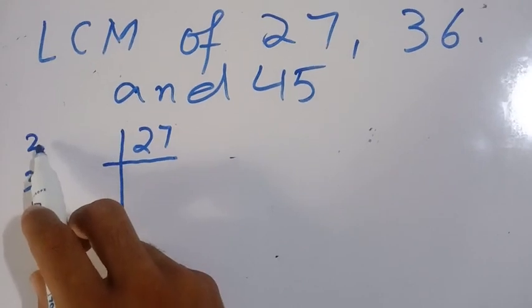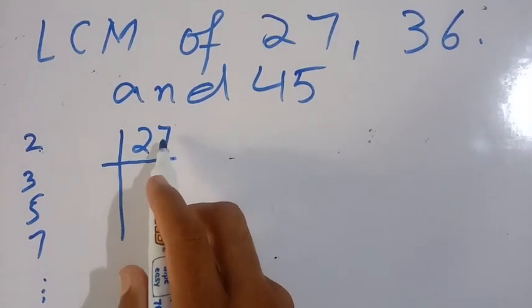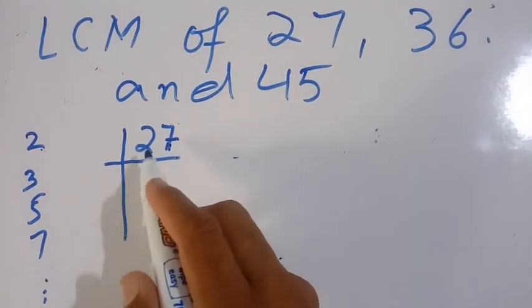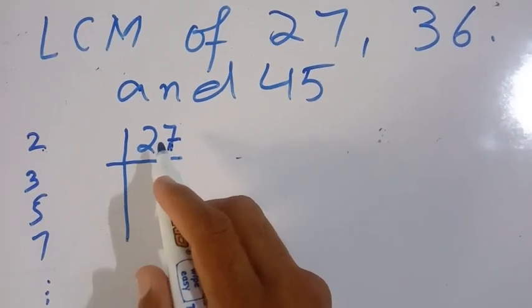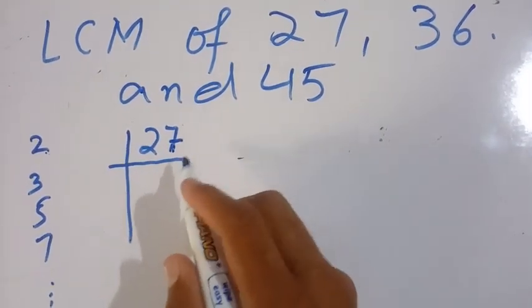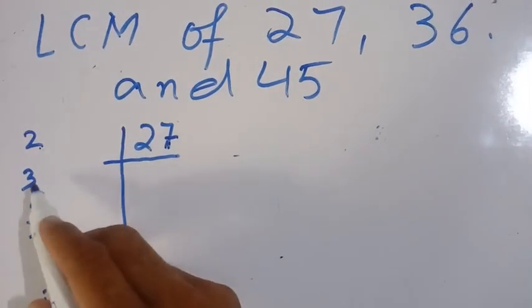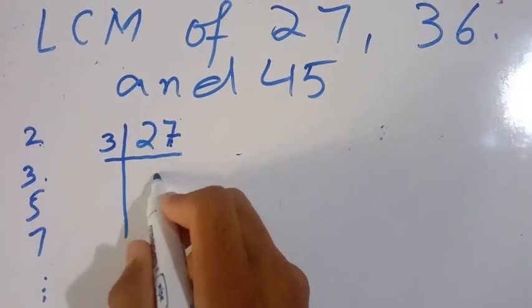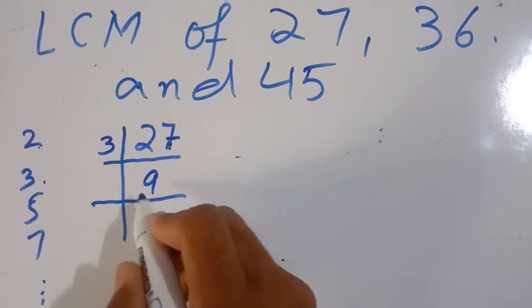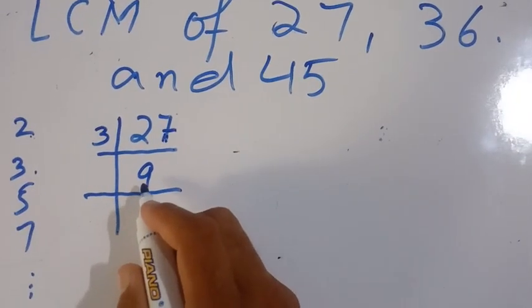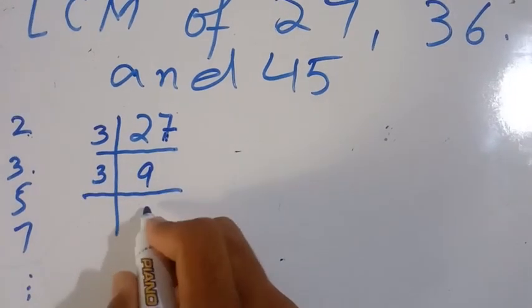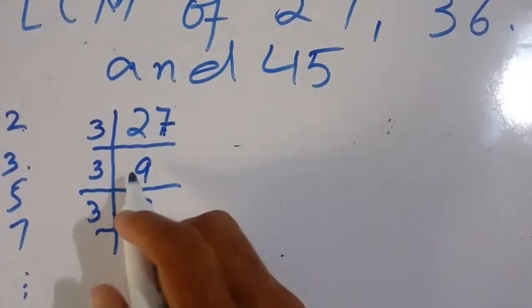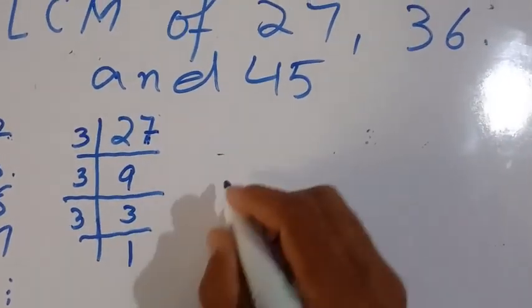The smallest prime is 2, but 2 does not divide 27 because the last digit of 27 is 7, so 27 is not divisible by 2. So we take 3. 3 divides 27: 3 nines are 27. Then we find the prime factors of 9: 3 divides 9, giving 3. So the prime factors of 27 are 3 × 3 × 3.